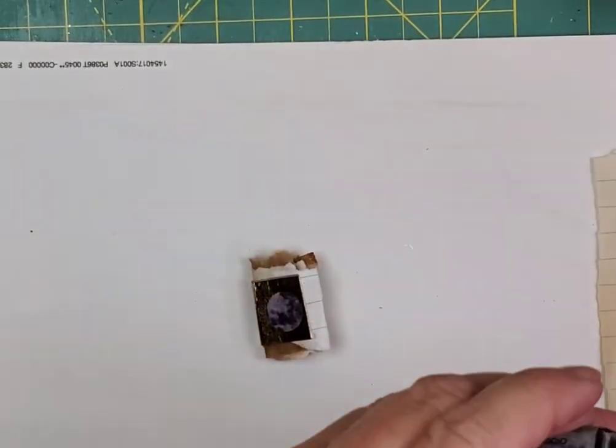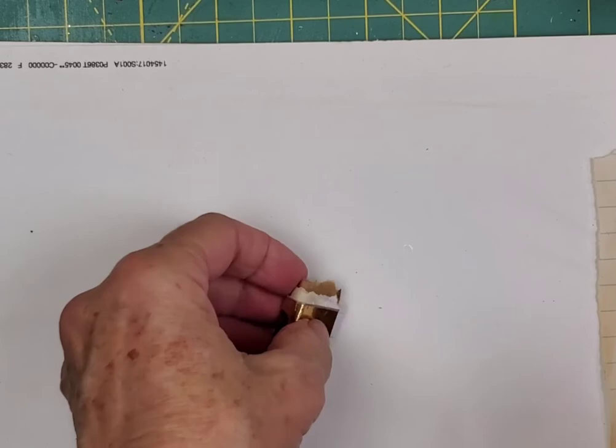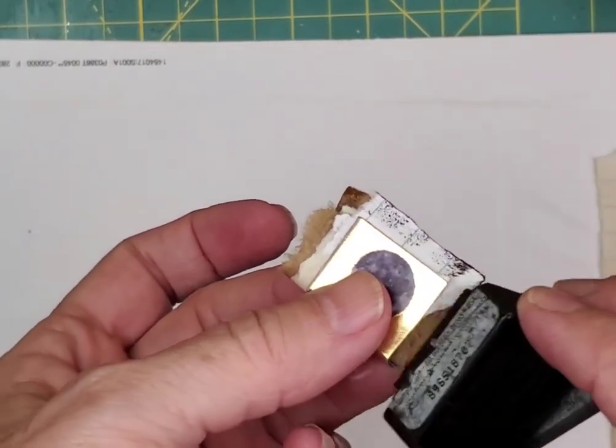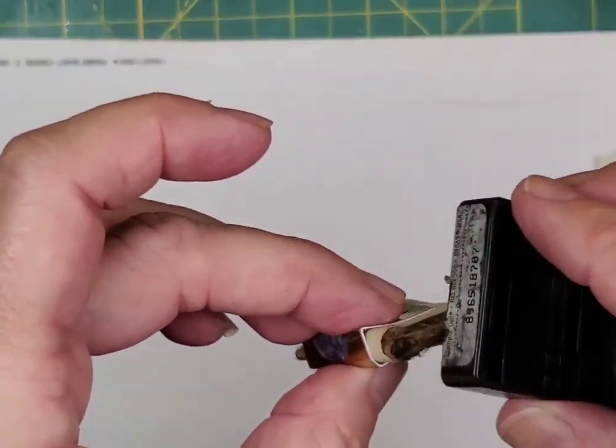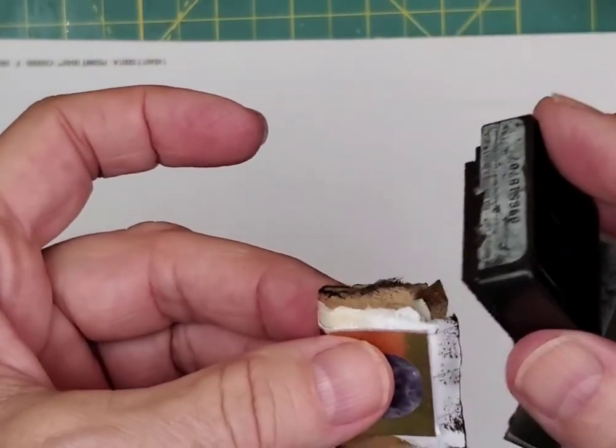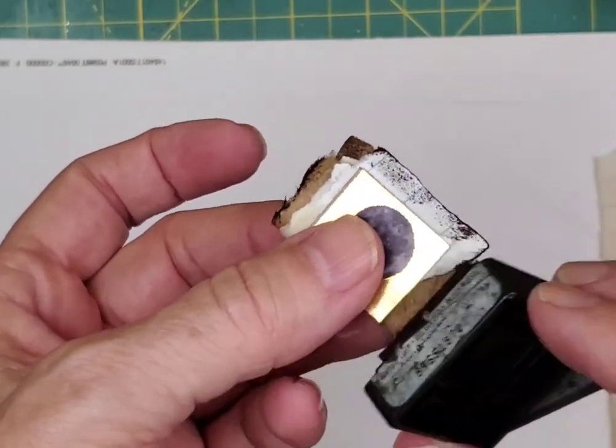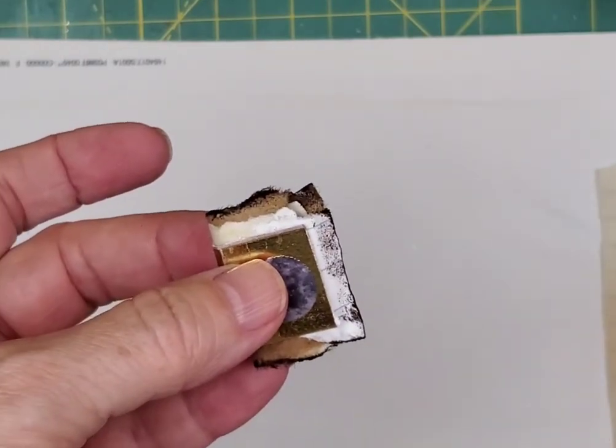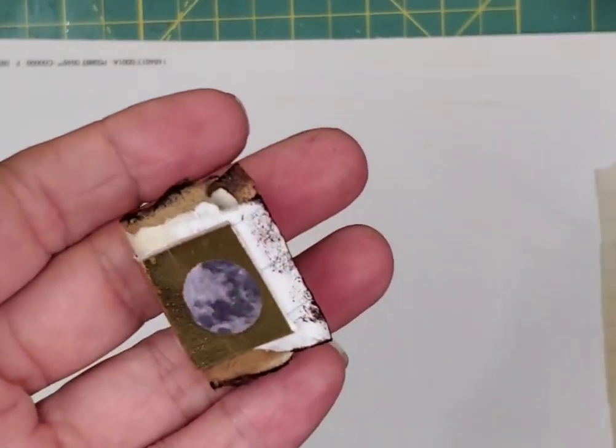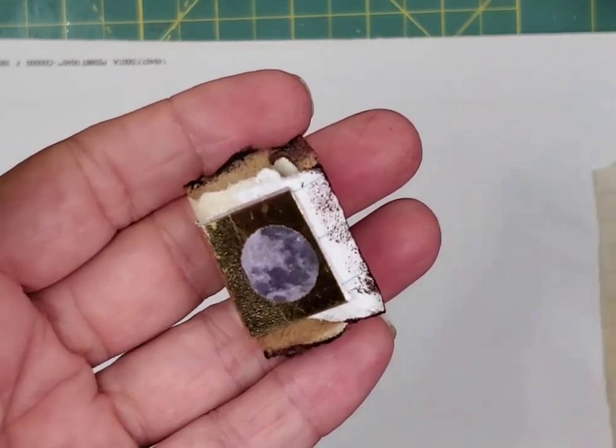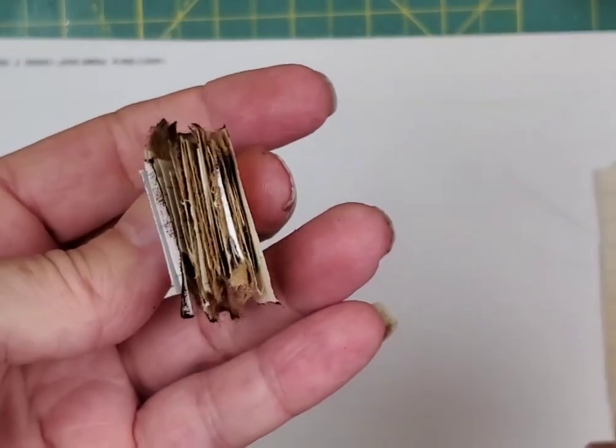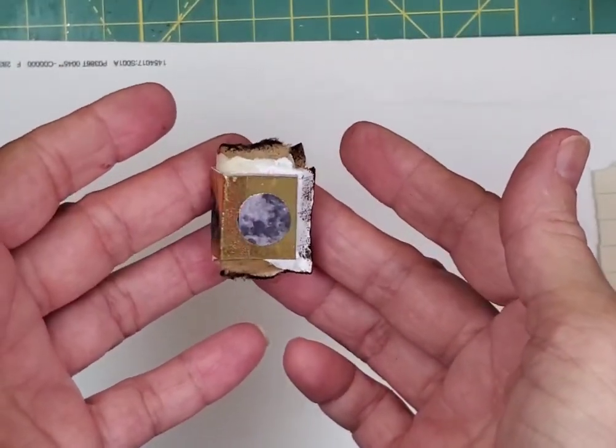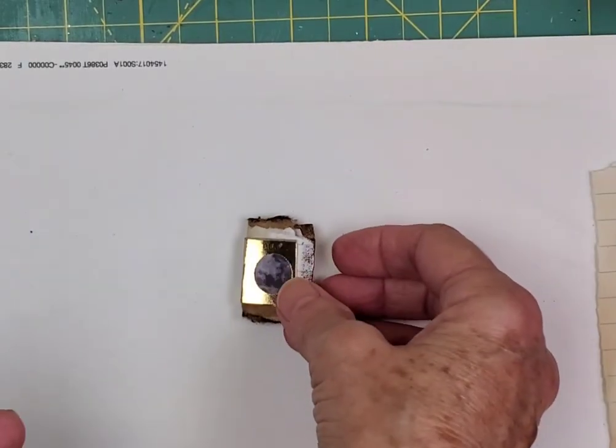The last thing that I do with my little books is I just give them a little taste of a stamp pad and that really brings out that aged look. I'm using a Stampin' Up chocolate chip.